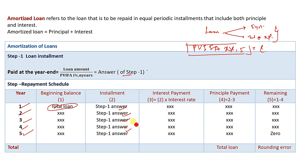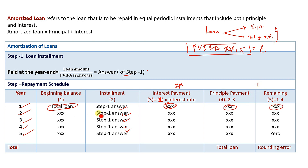Now we go to the principal payment. The principal payment is the installment minus the interest. Then the remaining loan is calculated. The starting balance, and then x percent interest is applied to that balance.